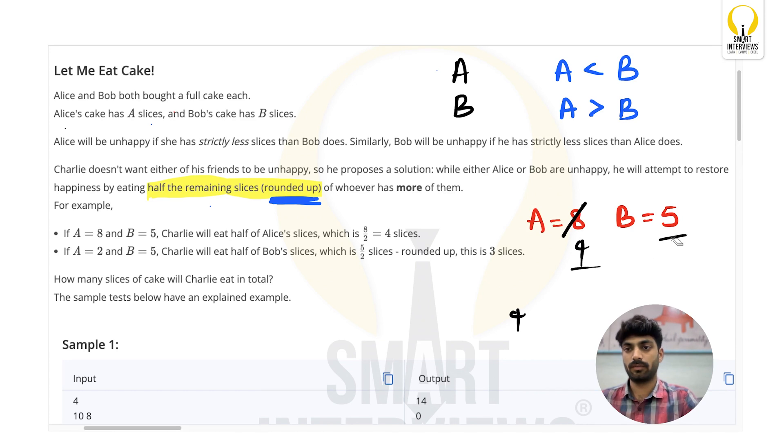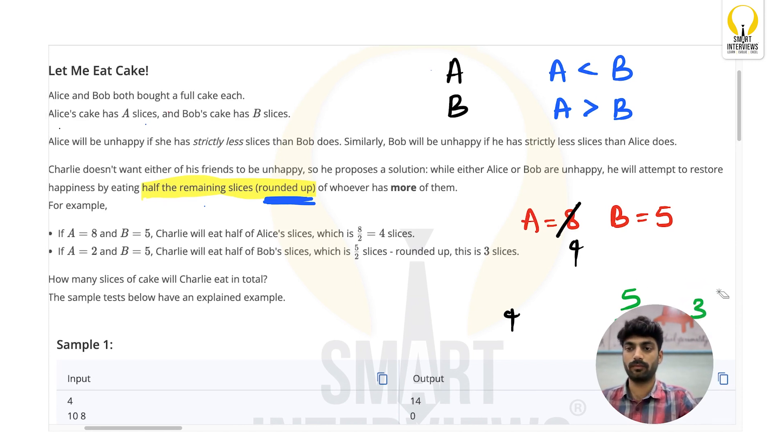So Alice's cake, remaining are 4. And still is anyone unhappy? Just now Alice became unhappy right, because Bob has more slices than Alice. So what will happen? Again Charlie will try to eat from Bob's cake. Five slices are there, half of it is 5 divided by 2. Normally division would return 2 right, but the division is rounded up, that means we need the ceiling value of this. So ceiling value is going to be 3, so Charlie is gonna eat 3 slices, so remaining gonna be just 2.